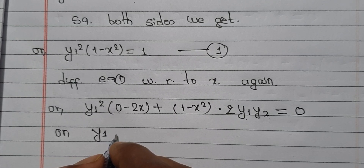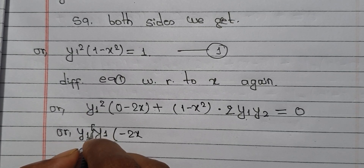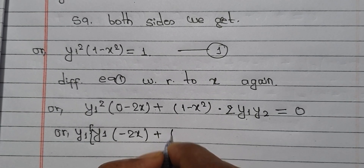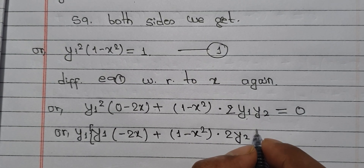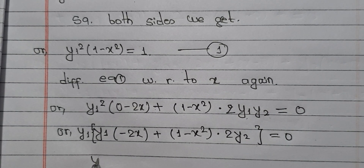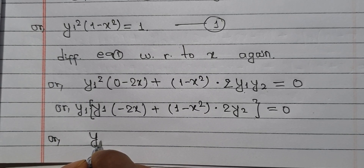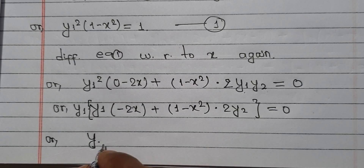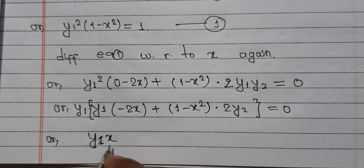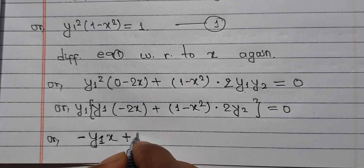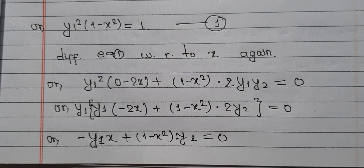Taking y₁ as common: y₁ times [minus 2x plus (1 minus x squared) times 2y₂] equals 0. If we calculate, we remove 2x and simplify. The result is: y₁·x minus (1 minus x squared)·y₂ equals 0. We write this in the appropriate form.